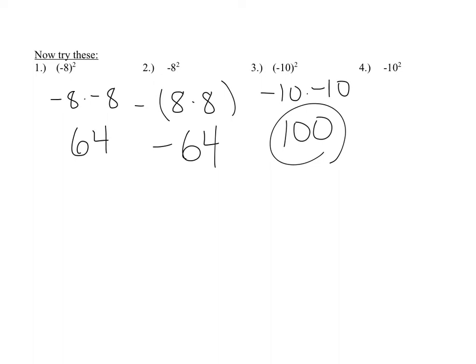Number 3, just like number 1 — negative 10 squared means we're doing negative 10 times negative 10, which is positive 100. Number 4, we do 10 times 10 first, then tack on that negative sign. So 10 times 10 is 100; tack on that negative sign — negative 100.